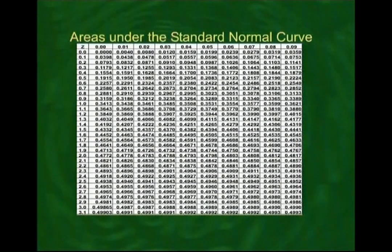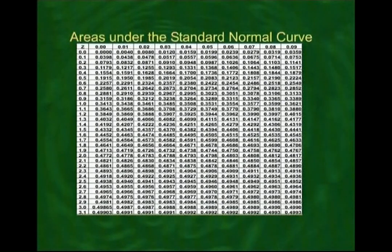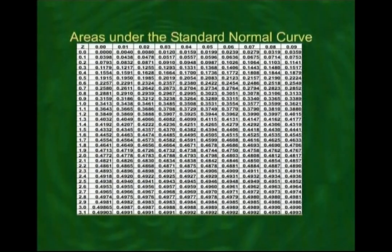Let me now present an interesting example. Suppose the length of life for an automatic dishwasher is approximately normally distributed with a mean life of 3.5 years and a standard deviation of 1.0 year. If this type of dishwasher is guaranteed for 12 months, what fraction of sales will require replacement? Our variable of interest is the life length of the dishwasher. The mean life is 3.5 years, but some dishwashers last longer and some fail sooner, giving a standard deviation of 1 year.